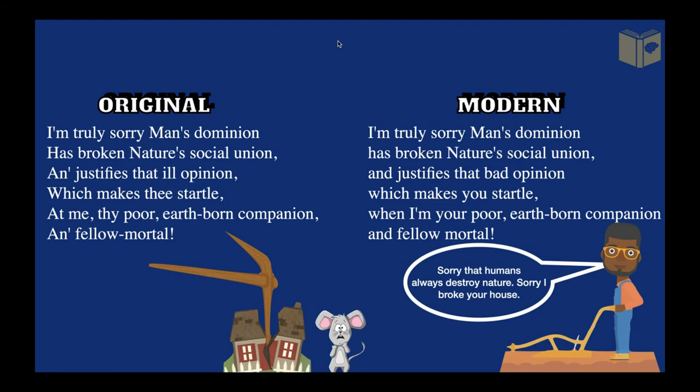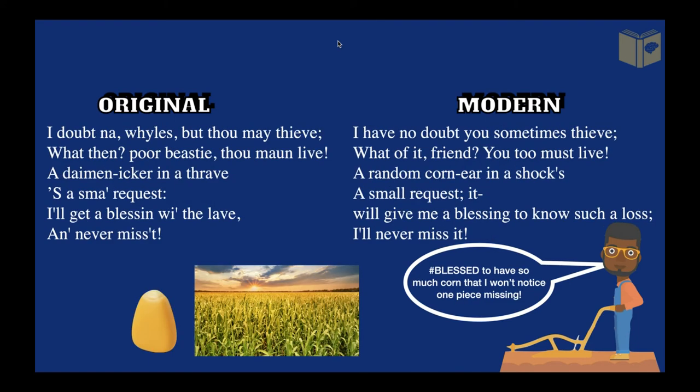In the next stanza, he's apologizing to the mouse, saying you and I have a connection — we're both part of nature. 'I am supposed to be your earth-born companion, and therefore I should feel empathy and sympathy towards you. I should treat you with respect.'